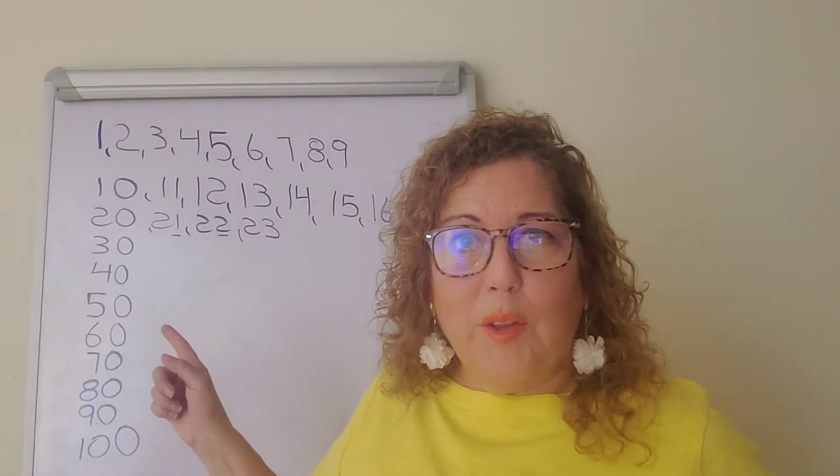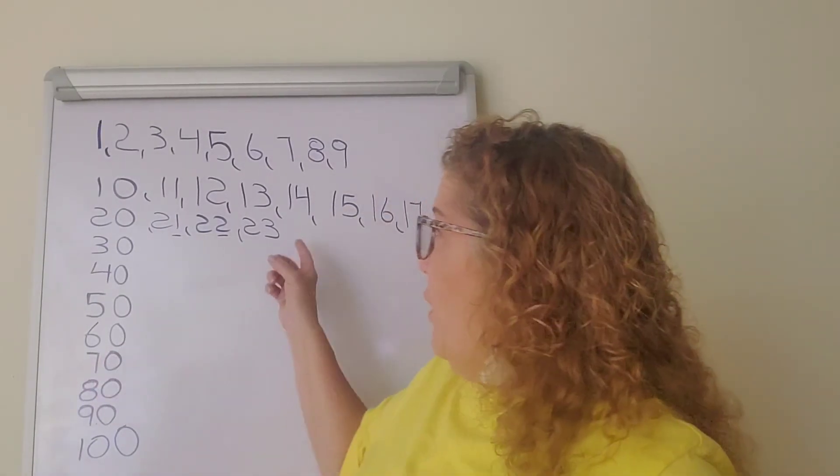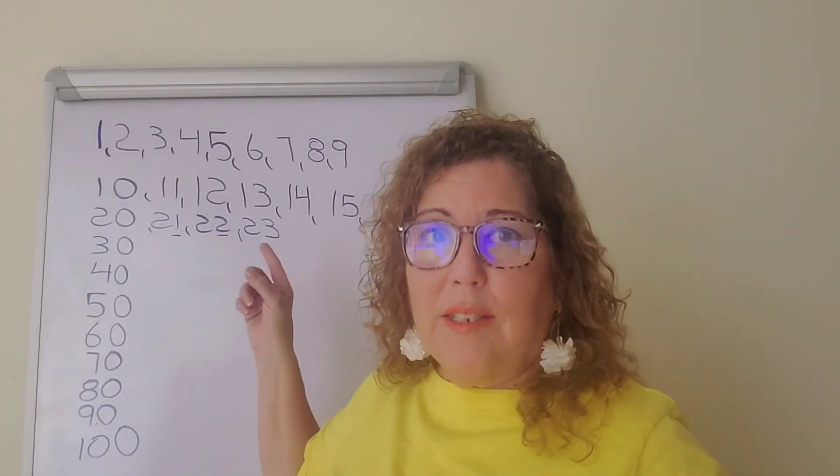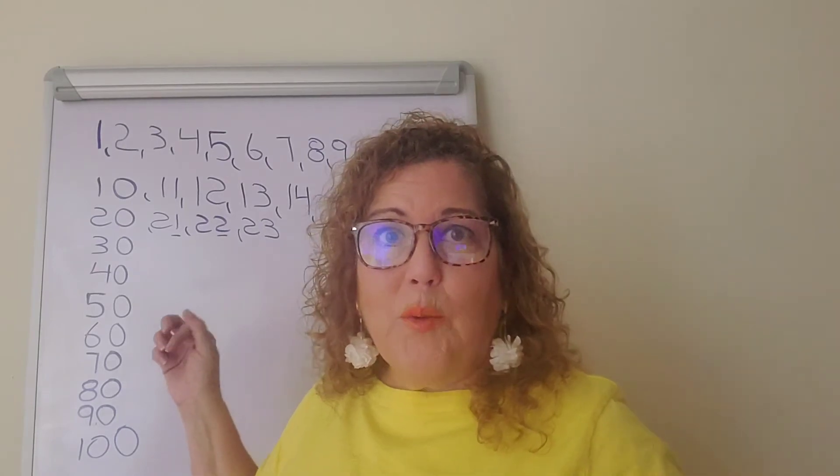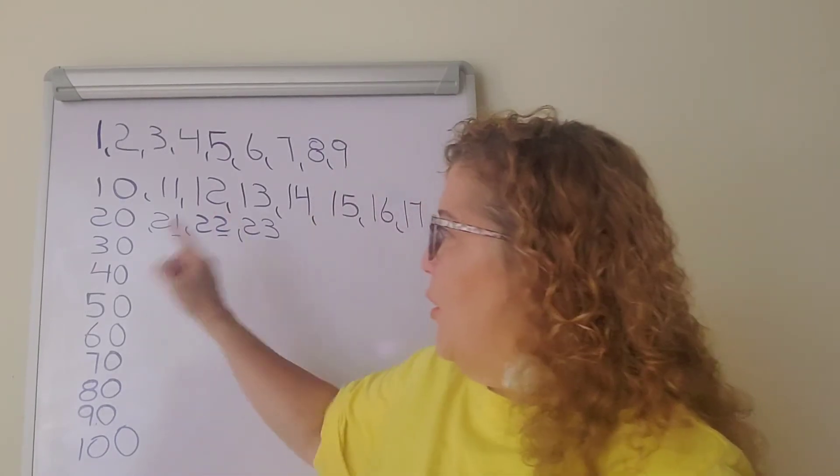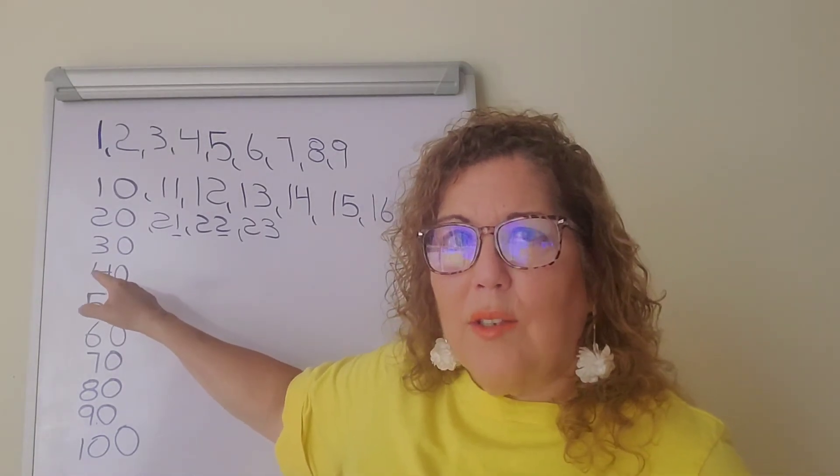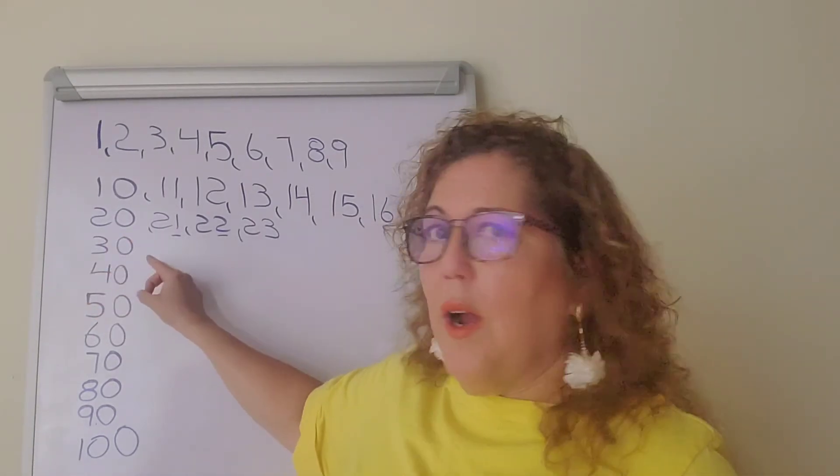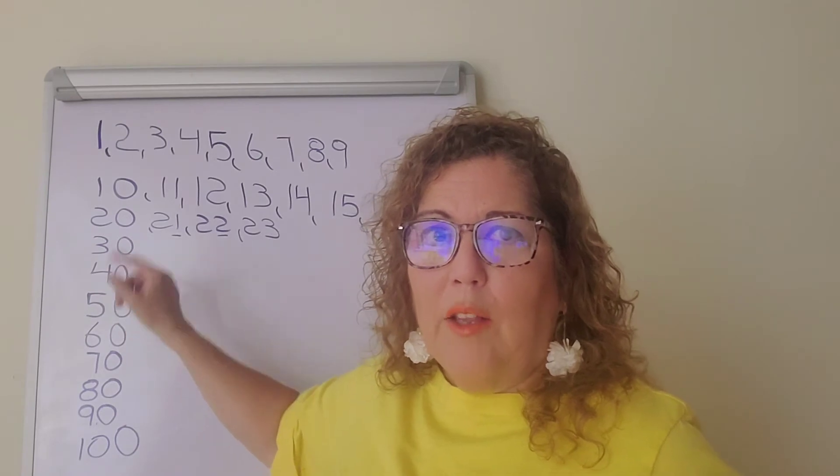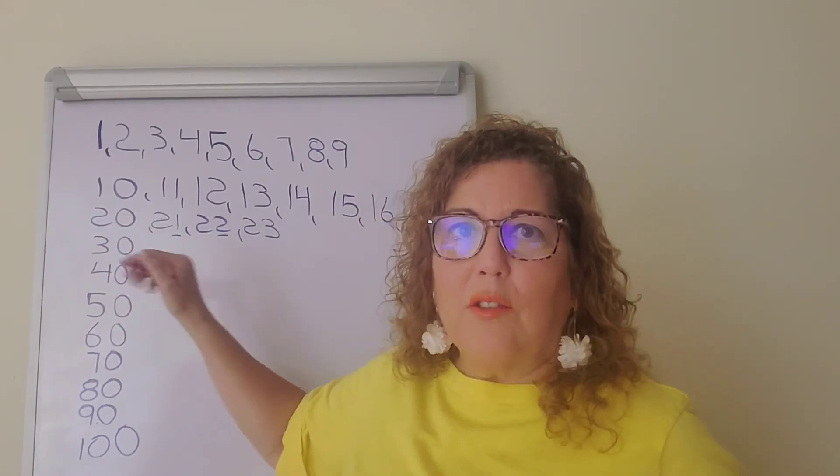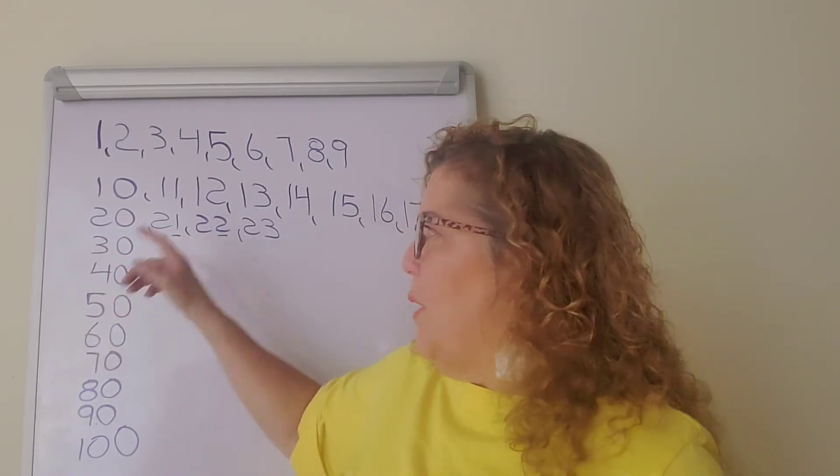Guess what comes after 23? It has to be 24, 25, 26, 27, 28, 29, and then 30. And we do the exact same thing with 30. Instead of writing a 2 and a 1, we're gonna write a 3 and a 1, 3 and a 2, 3 and 3, and so on.